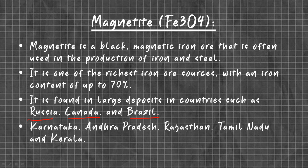Karnataka, Andhra Pradesh, Rajasthan, Tamil Nadu, and Kerala are the main sources of magnetic iron ore in India.